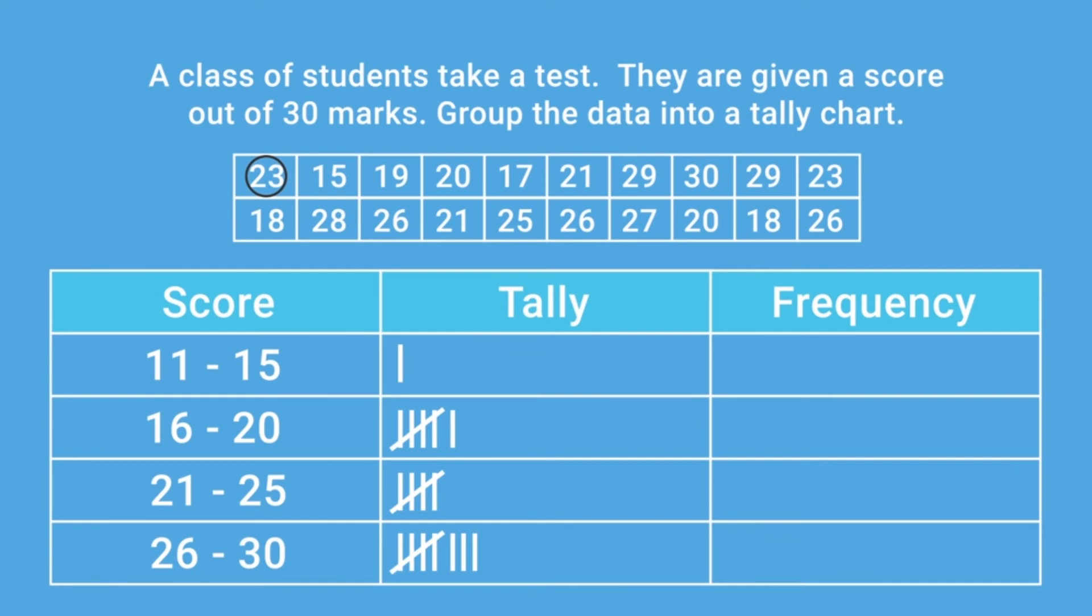Now we have tallied our data, we can complete the frequency column of our table. Each tally mark represents 1, so the frequency for the 11 to 15 group is 1. The frequency for the 16 to 20 group is 6. The frequency for the 21 to 25 is 5, and the frequency for the final group is 8.